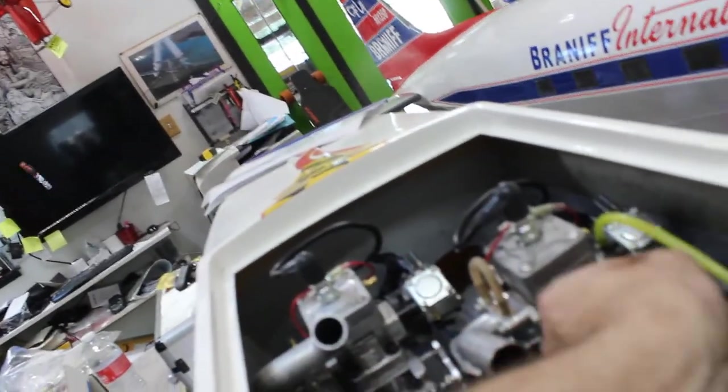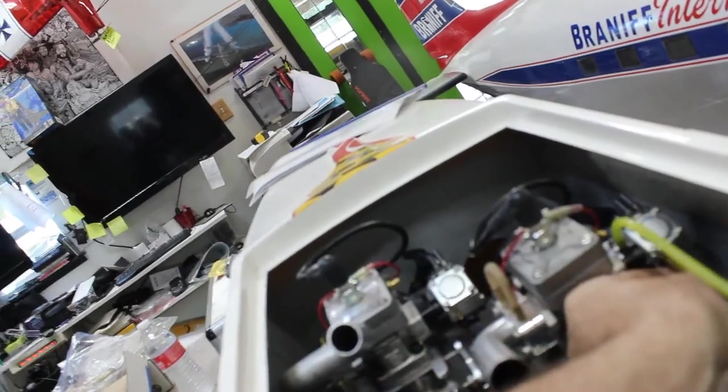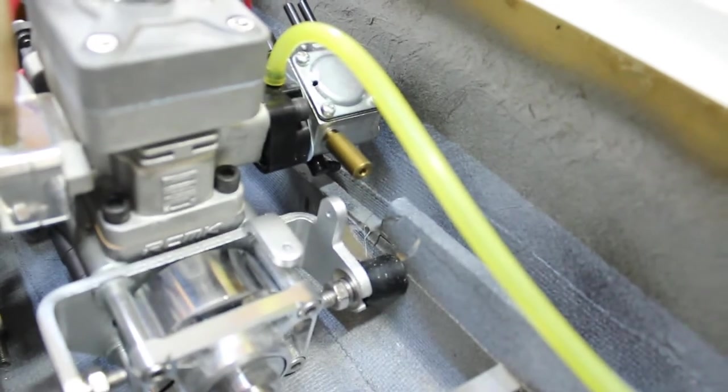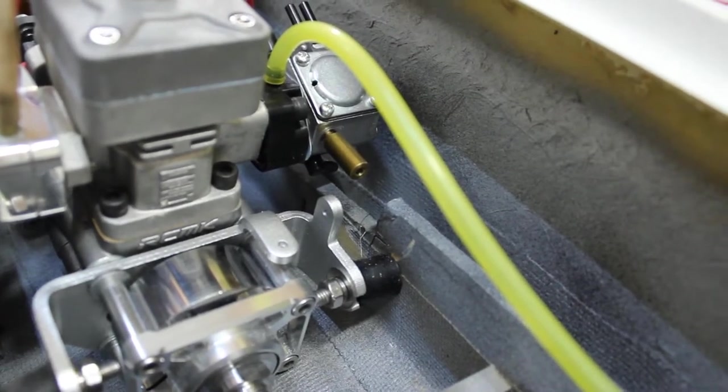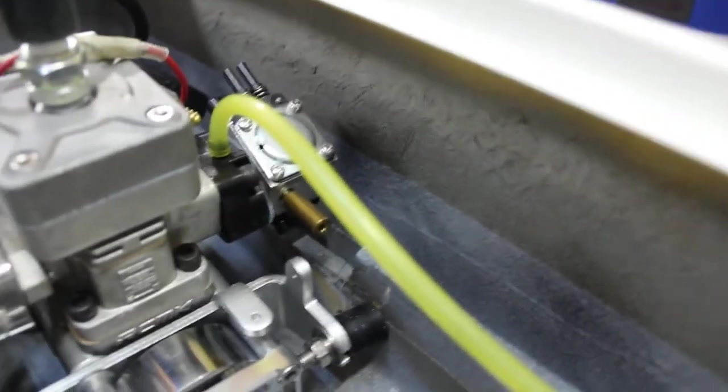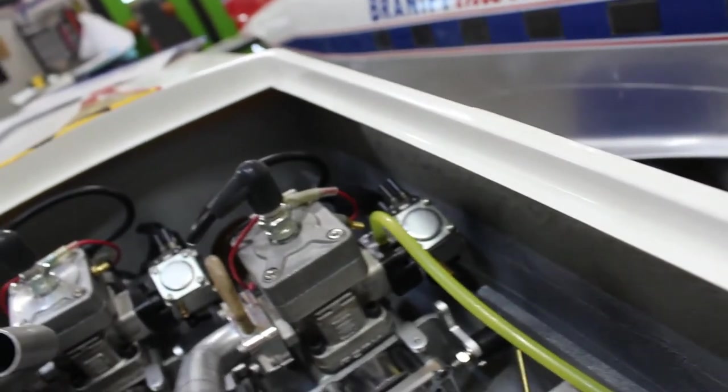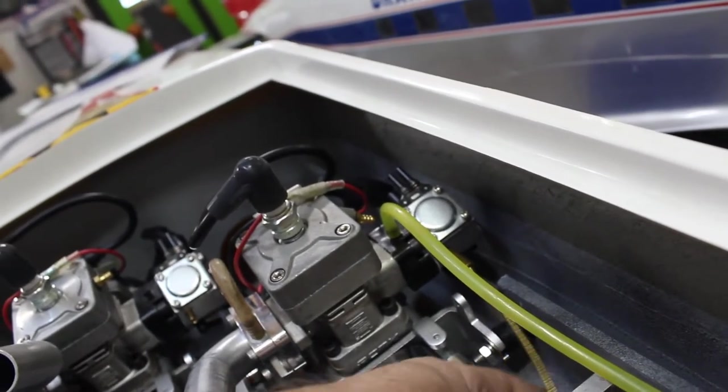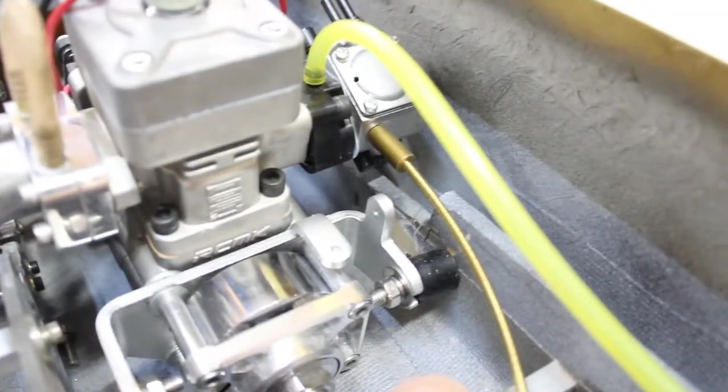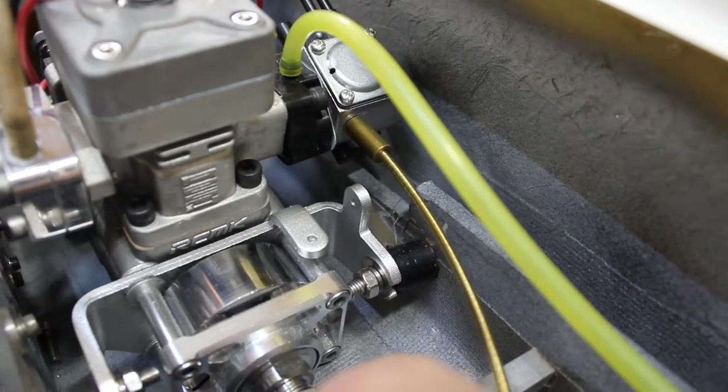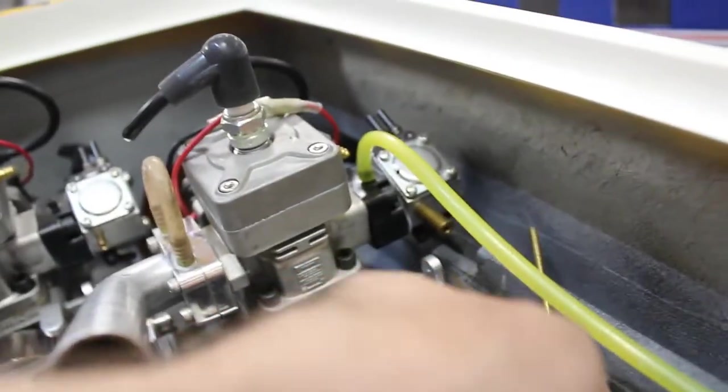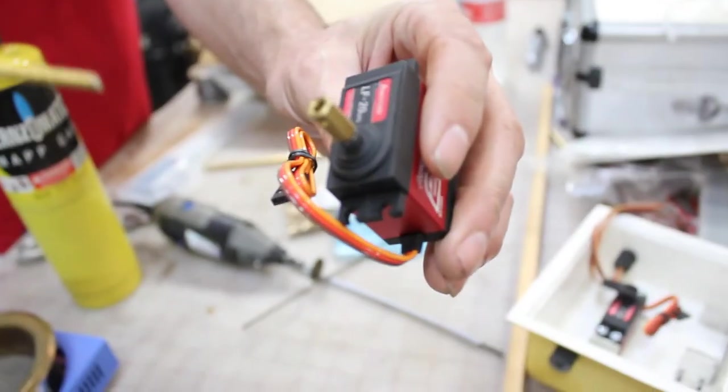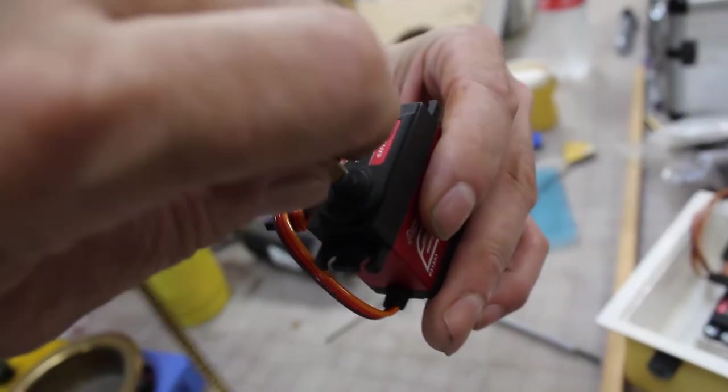That goes on there just like that, and then there's a set screw. On the other side that goes in there just like that, then the shaft you can run it through a sheathing or whatever. On the other side you have this here.